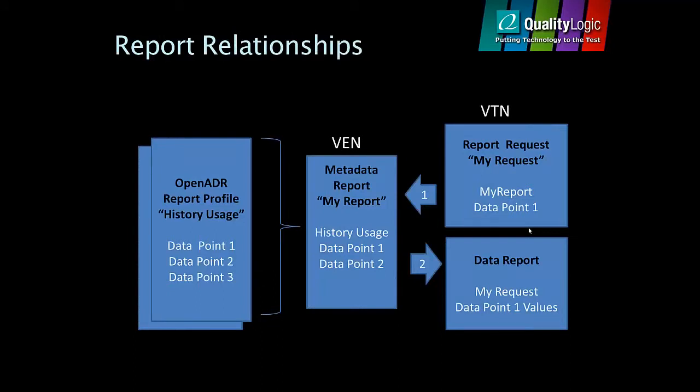On the left we show a standard report profile for a history usage report supporting three data points. The VEN offers a report based on the history usage profile and offers two of the data points. A VTN requests the offered report from the VEN but only asks for one of the offered data points. The delivered report contains interval data for the requested data point.